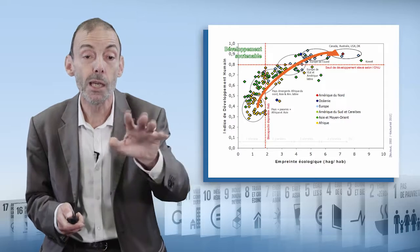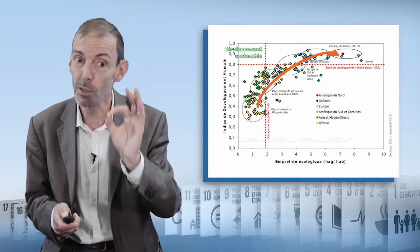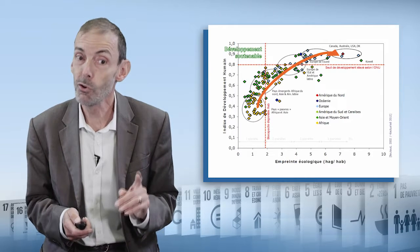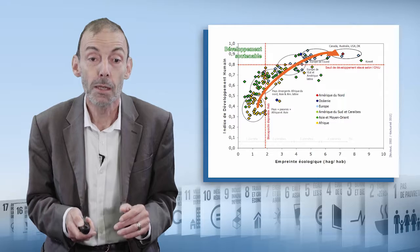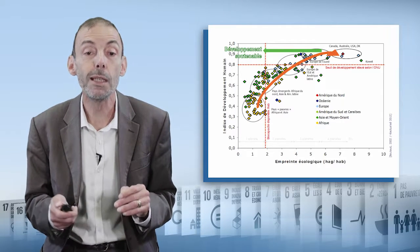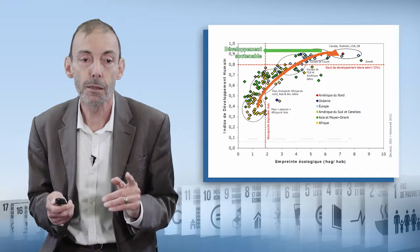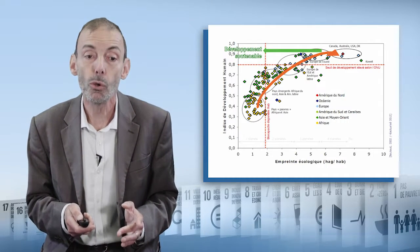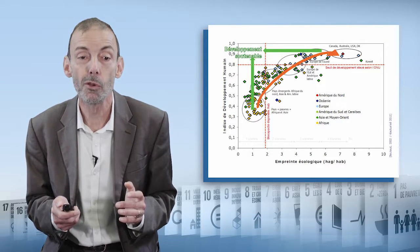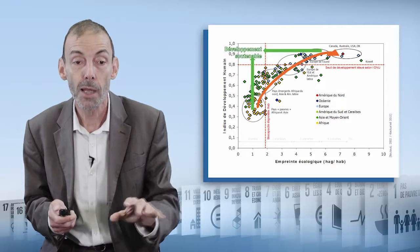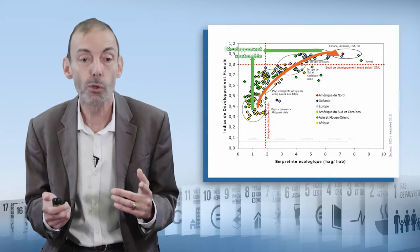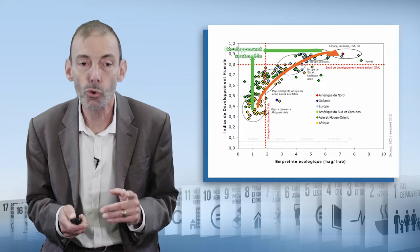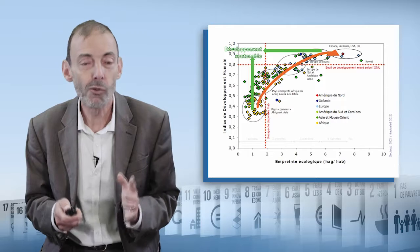What does that mean? It means there's a huge challenge, particularly for countries in the middle of the graph, because they are the closest to the top left-hand corner, and they are the ones that need to speed up to achieve that. For the more developed countries, things will probably be the most difficult — they need to reverse the path they're following. And it's also difficult for countries that have not yet reached the right level of development, because they must develop and also reach sustainable development.